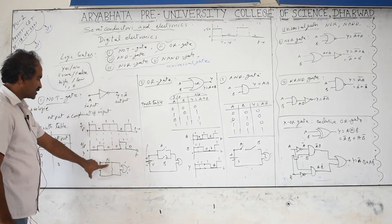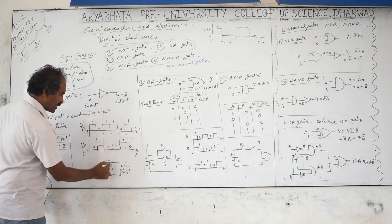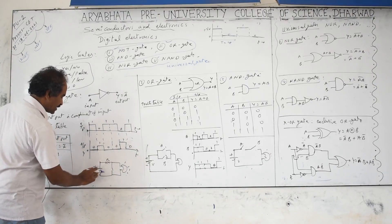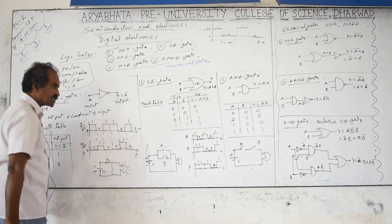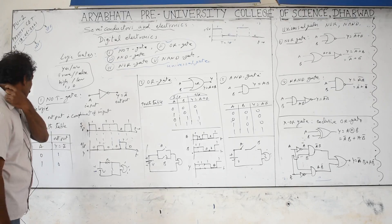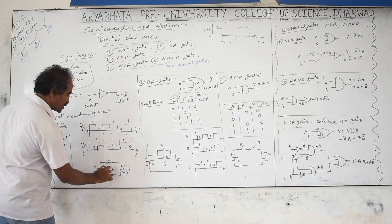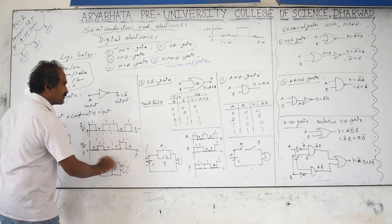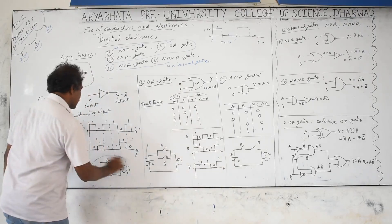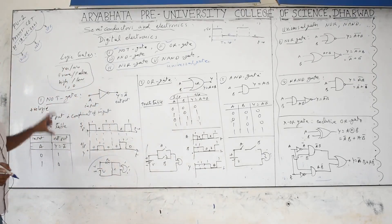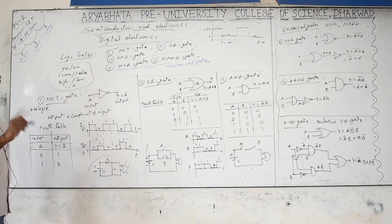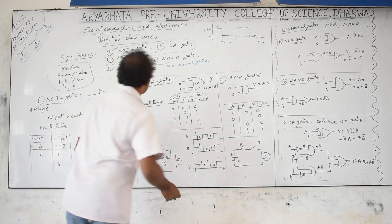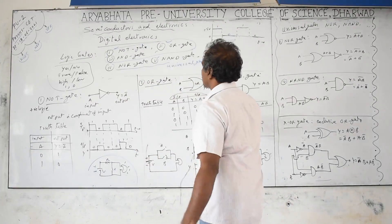In timing diagrams: high input gives low output and low input gives high output — vice versa throughout. The mechanical equivalent of a NOT gate: a switch in parallel with a bulb — when the switch is closed (input = 1), current bypasses the bulb (output = 0/low); when open, current flows through the bulb (output = 1/high). Transistor versions of gates are deleted from the current syllabus.